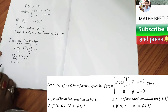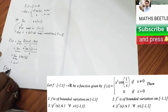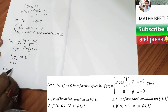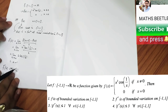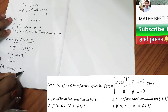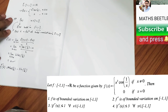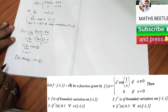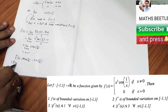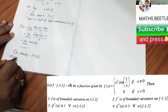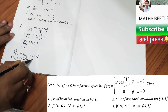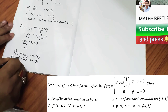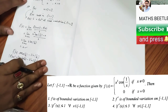Now compute the derivative of f(x). Differentiating x²·cos(1/x) gives f'(x) = 2x·cos(1/x) - sin(1/x). Take the modulus of both sides to begin bounding |f'(x)|.